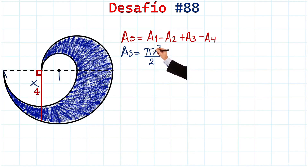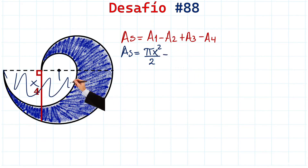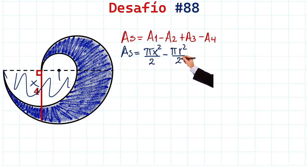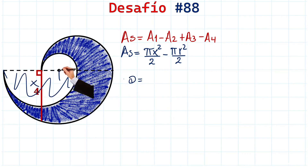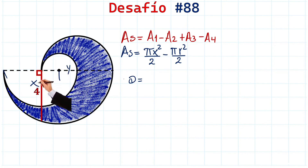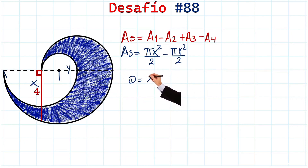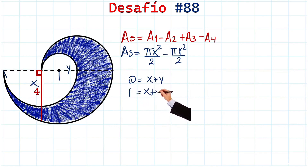Minus Area 2 — remember, it was this part right here — so we need its radius. It will be π times radius squared over 2. What is the radius of this part? Pay close attention, because the diameter is going to be equal to x — from here to here — plus y — from here to here. So x plus y is the diameter, and the radius equals (x + y) / 2.